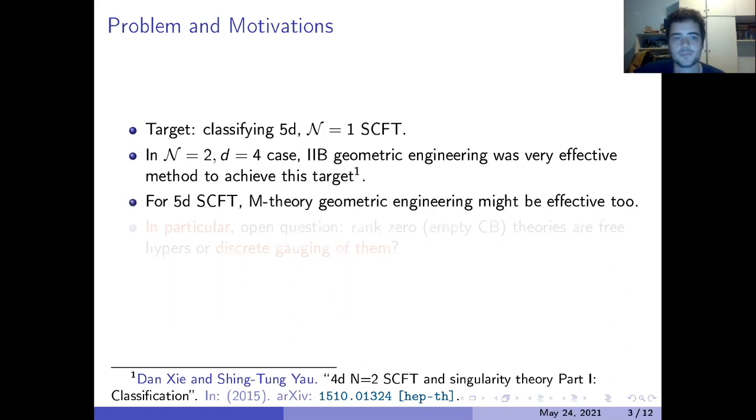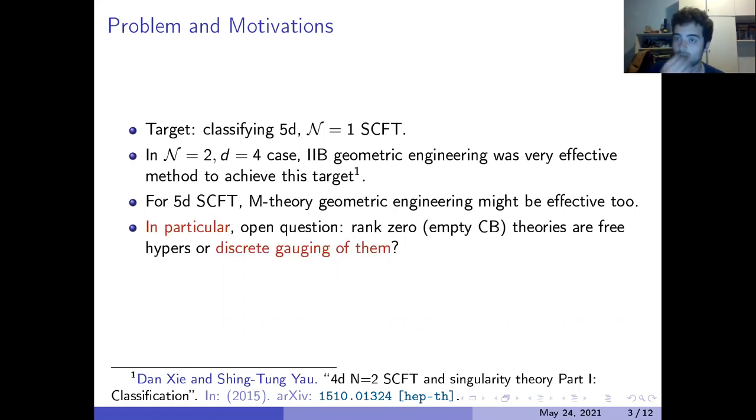A similar strategy would be nice to be implemented also for the five-dimensional case. In this case one can use for example M-theory, or as we will do today, Type IIA limit. In particular, in this paper we addressed the following question: we concentrated on so-called rank zero theories, so theories with empty Coulomb branch, and we asked ourselves if these theories are free hypers, so the moduli space, the Higgs branch in that case, is some direct product of the quaternions, or if these theories are discrete gauging of free hypers. This means that instead of being a direct product of the quaternions, the Higgs branch is an orbifold by a discrete group.